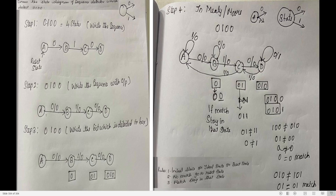State A is called the reset state, also known as the ideal state or initial state. We write an arrow mark indicating this is the reset or initial state. Now let us go to step 2: write the sequence with output.